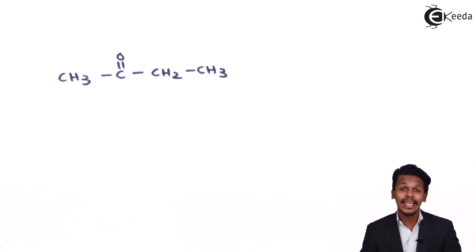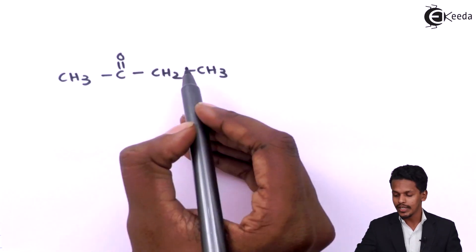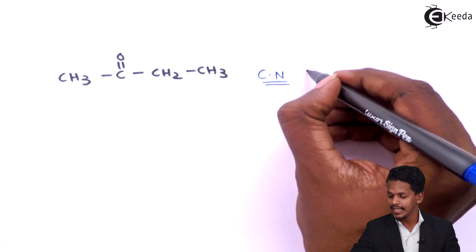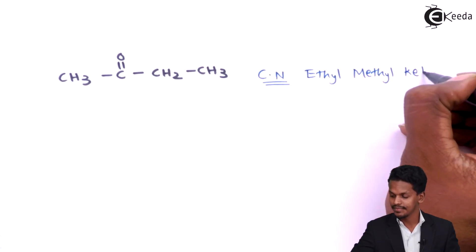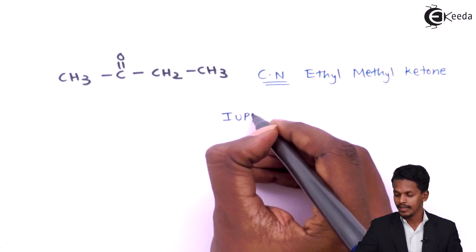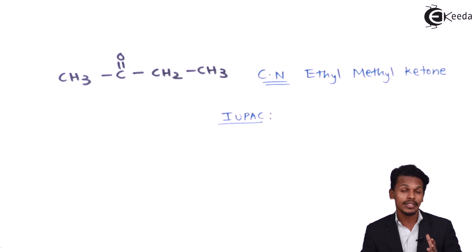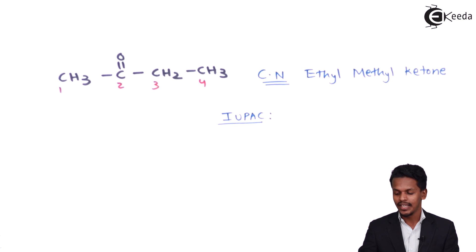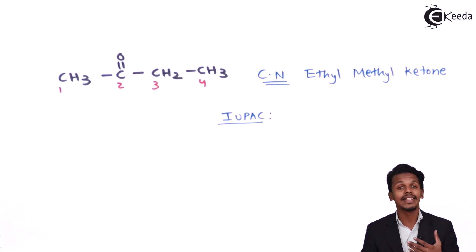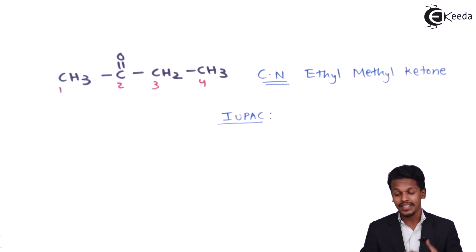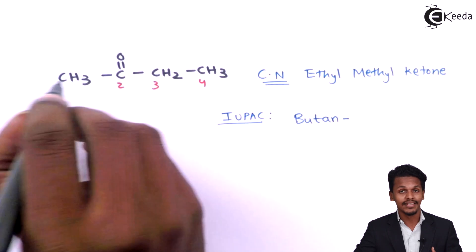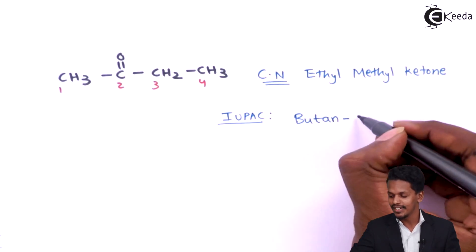For the next compound, the groups attached to the carbonyl are an ethyl group and a methyl group, giving the common name ethyl methyl ketone. For IUPAC nomenclature, we number the chain from the end nearest to the carbonyl group: 1, 2, 3, 4. There are 4 carbon atoms in the straight chain, giving the alkane name butane. Since it is a ketone, and the carbonyl is at carbon 2, the IUPAC name is butan-2-one.